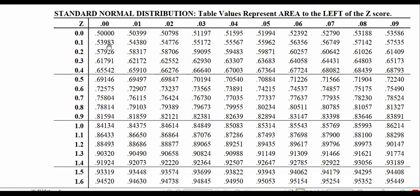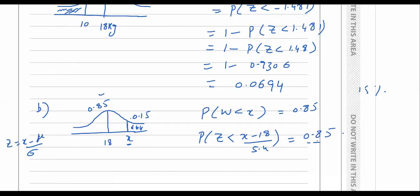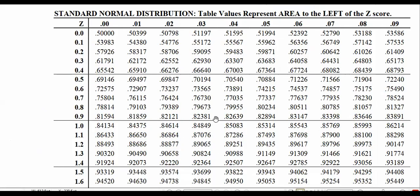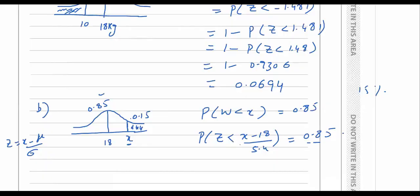Consulting the standard normal distribution table and looking for 0.85, we find it corresponds to z = 1.04 — it appears in the row for 1 and the column for 0.04. So (x − 18) / 5.4 = 1.04.